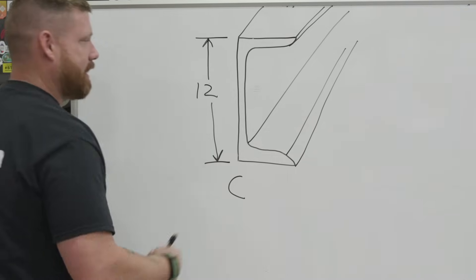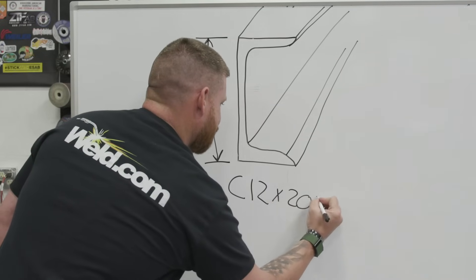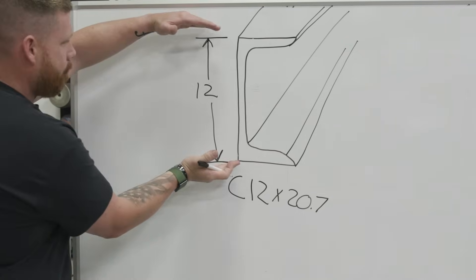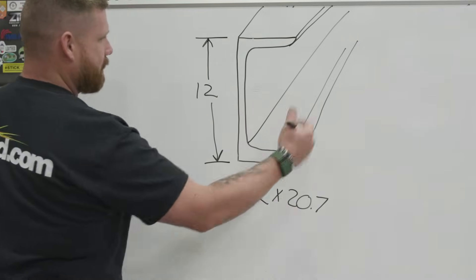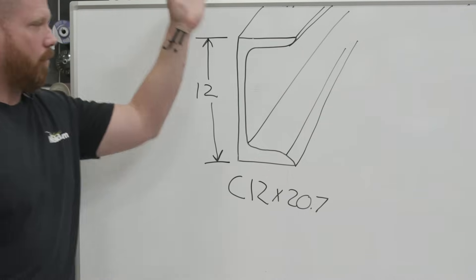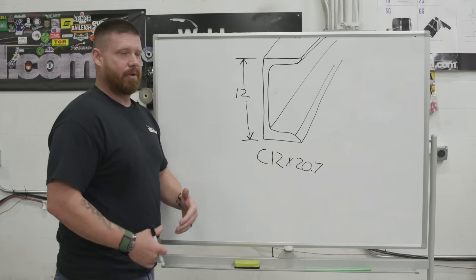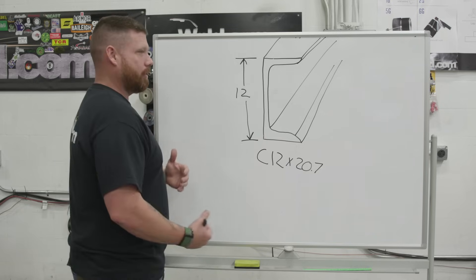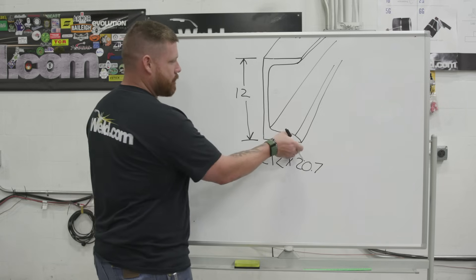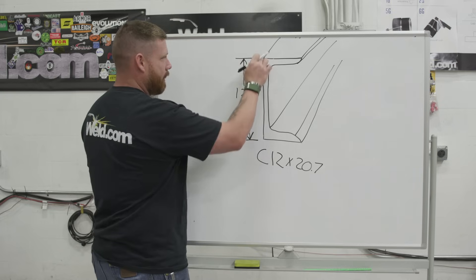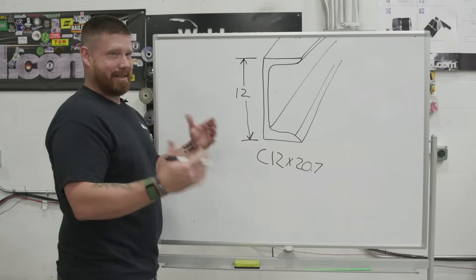These are dimensioned out very similar to an I-beam in the fact that we're going to use the nominal depth, but on the channel, it is the actual depth of that web. So let's say that this is 12 inches here. This would be listed out on a set of prints as C12 by 20.7 or something to that effect. So it's going to be that actual depth. So you can put a tape measure across it and that is the actual dimension, 12 by 20.7, and that's the pounds per linear foot once again. So if we were able to cut one foot off of this, it would be 20.7.